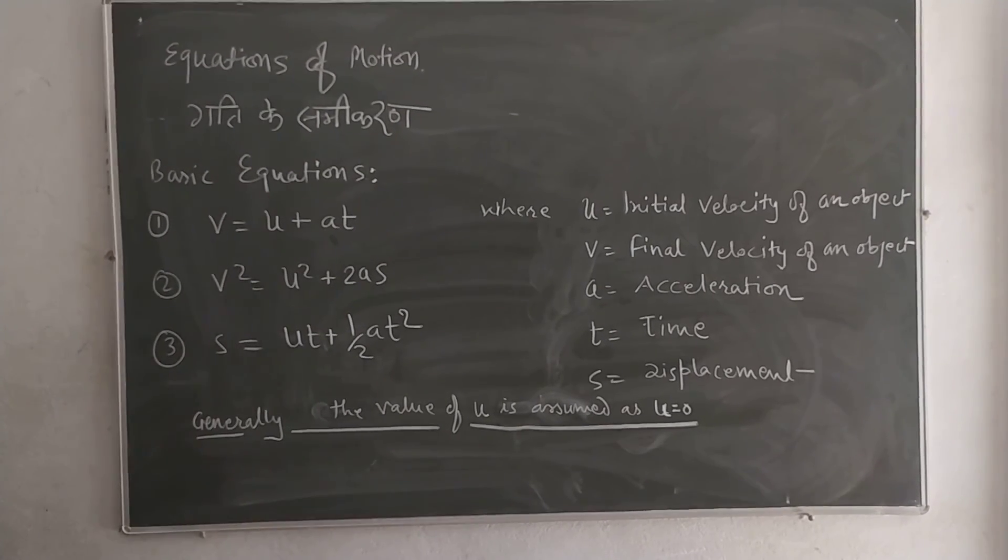T is time. What is the use of these equations? If you are given the initial velocity, final velocity and time, or if initial velocity is given, acceleration is given and time is given, you are able to find out the final velocity.